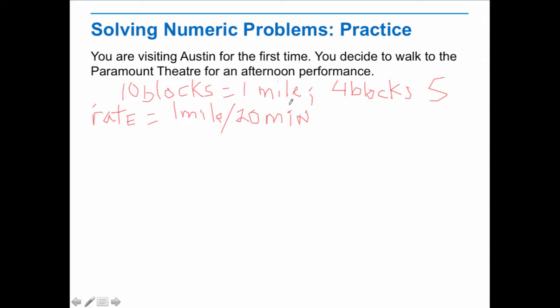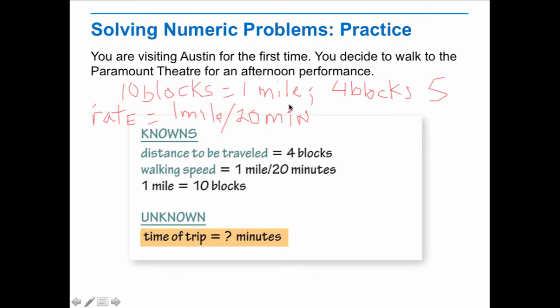Let's look at what we got. That is right. We've got our four blocks. Our walking speed is one mile in 20 minutes, and one mile equals 10 blocks. What we don't know is the time of the trip in minutes. So now we have to think about how do we calculate that from the information that we have?